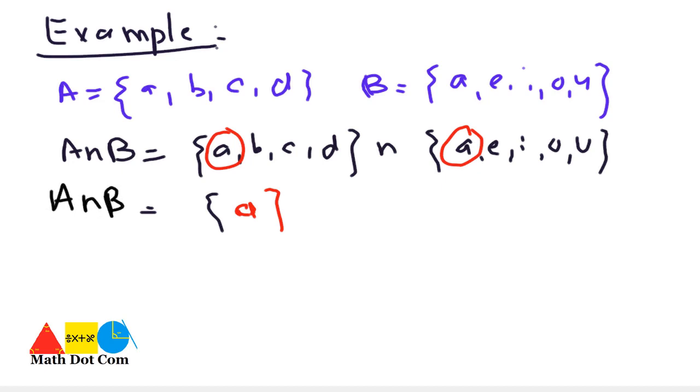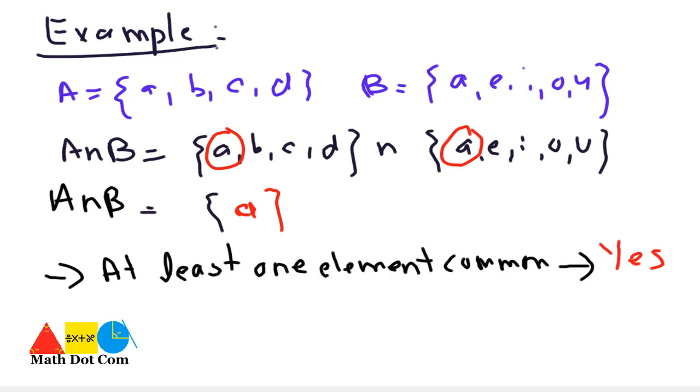Now we have to check that the conditions are satisfying. The first condition was at least one element in common. Yes, it is satisfying the condition as we have an element a.